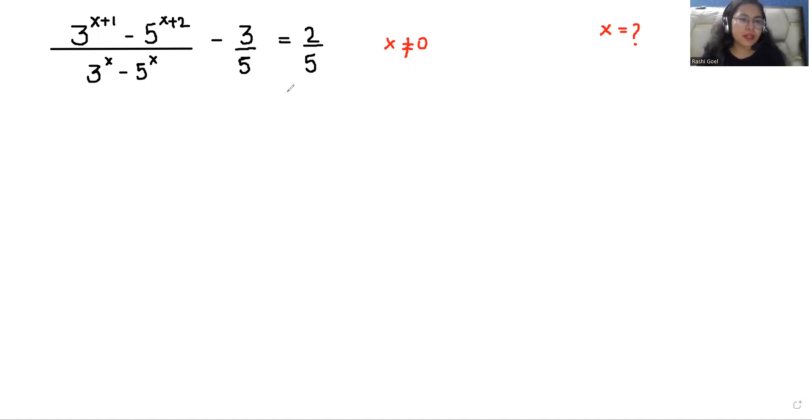3 power x plus 1 minus 5 power x plus 2 over 3 power x minus 5 power x minus 3 by 5 is equals to 2 by 5 where x is not equals to 0 and we have to find the value of x.